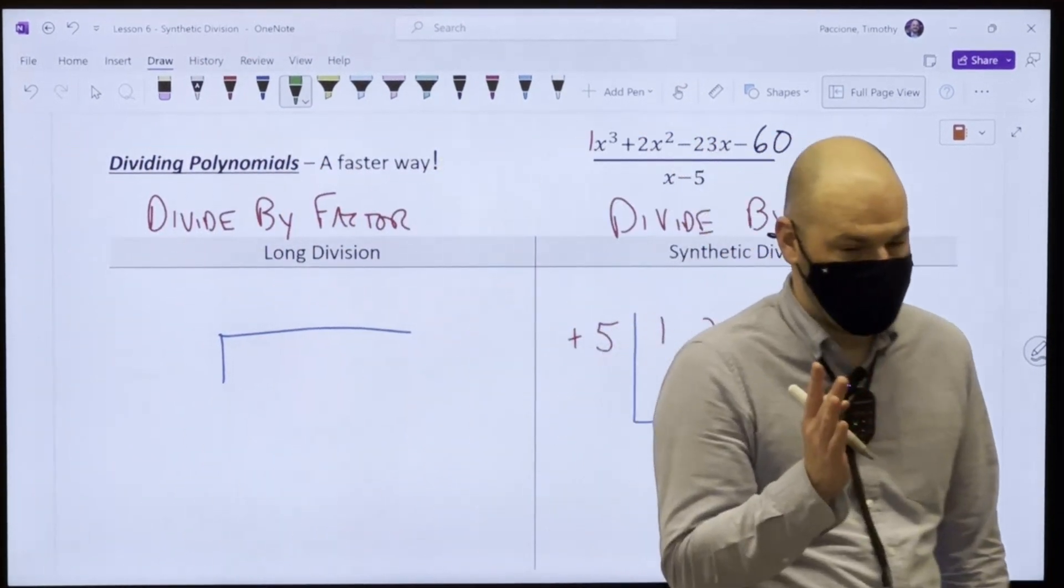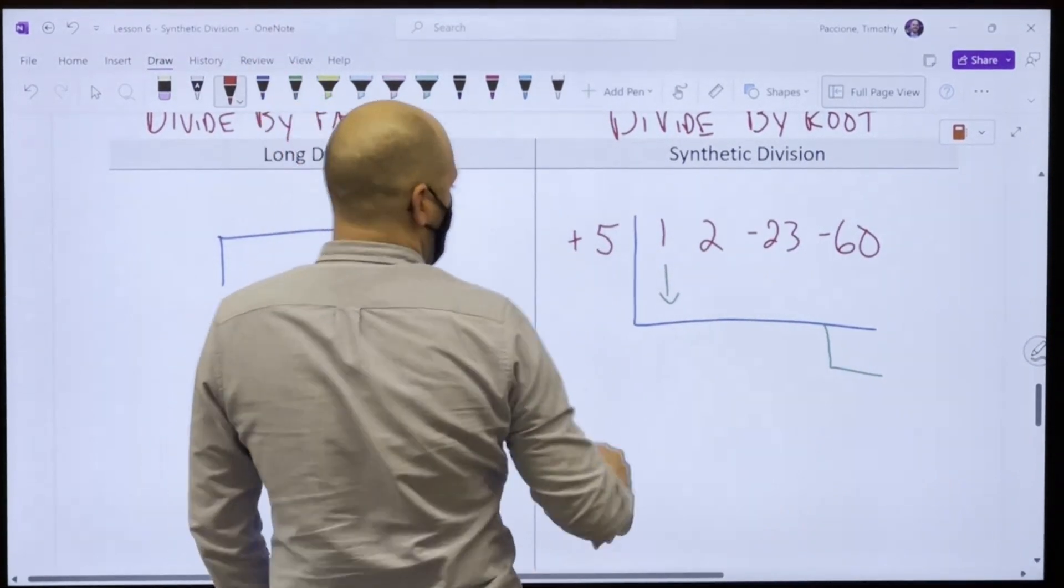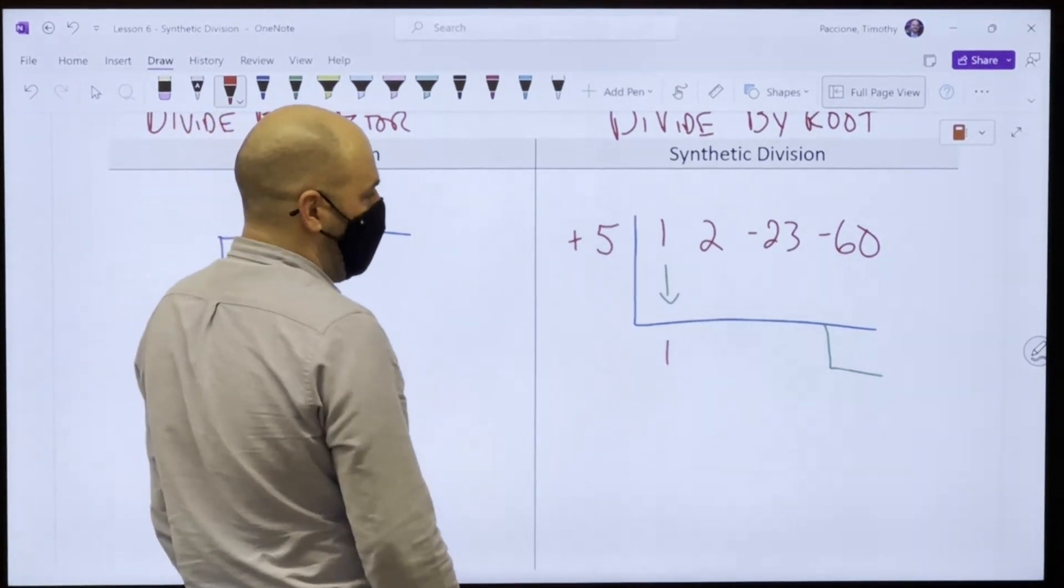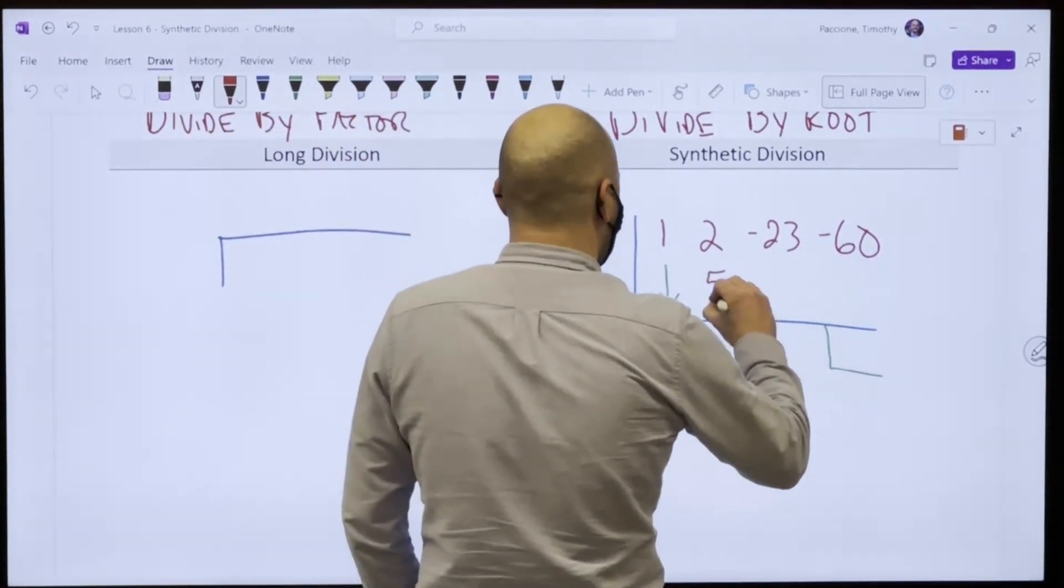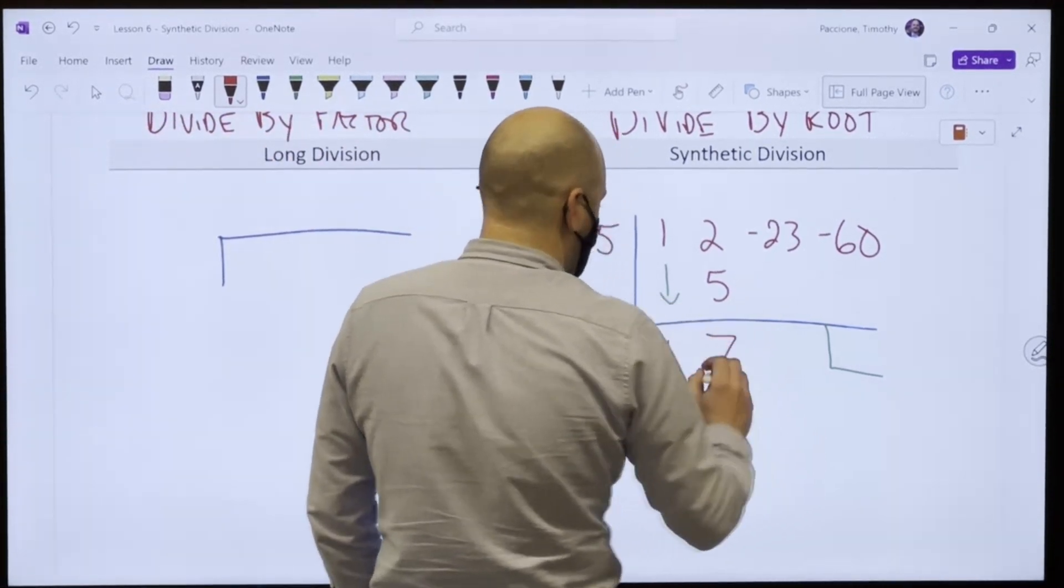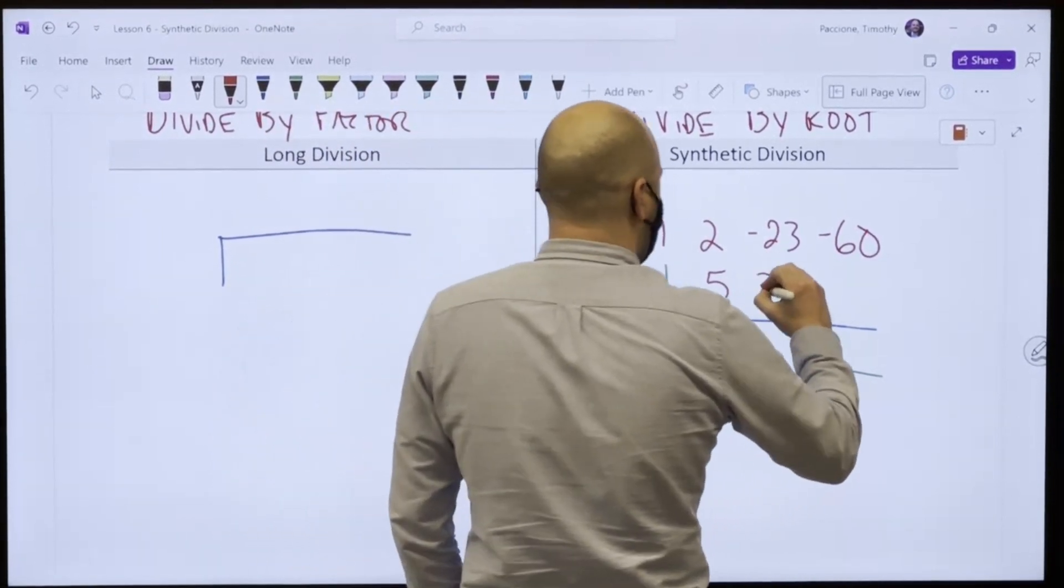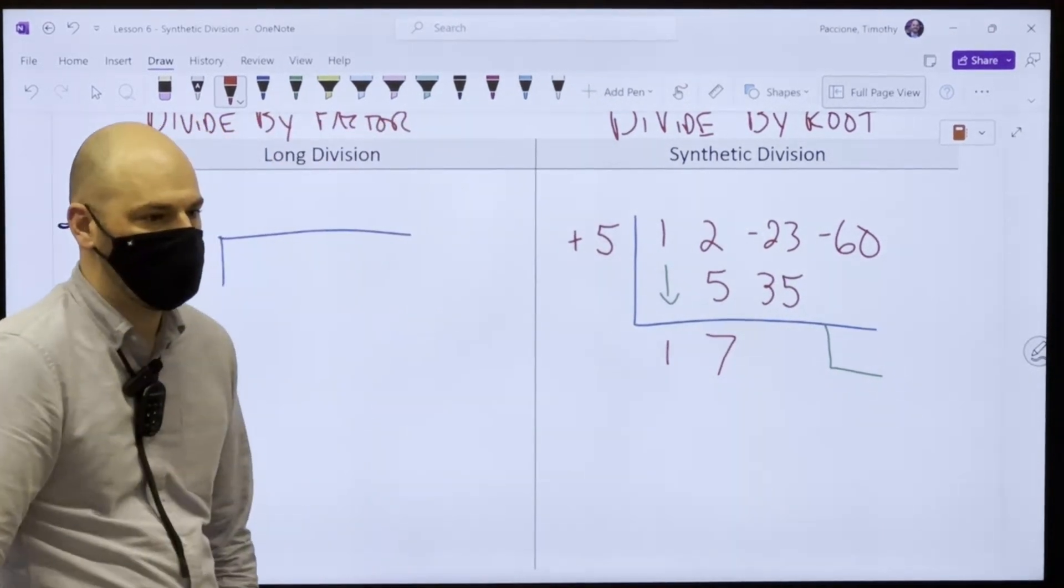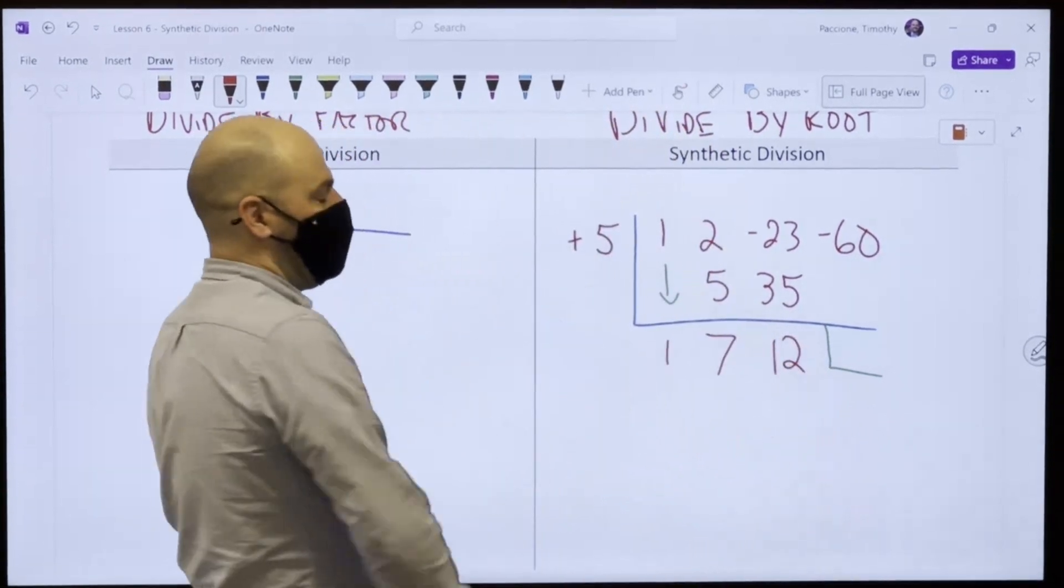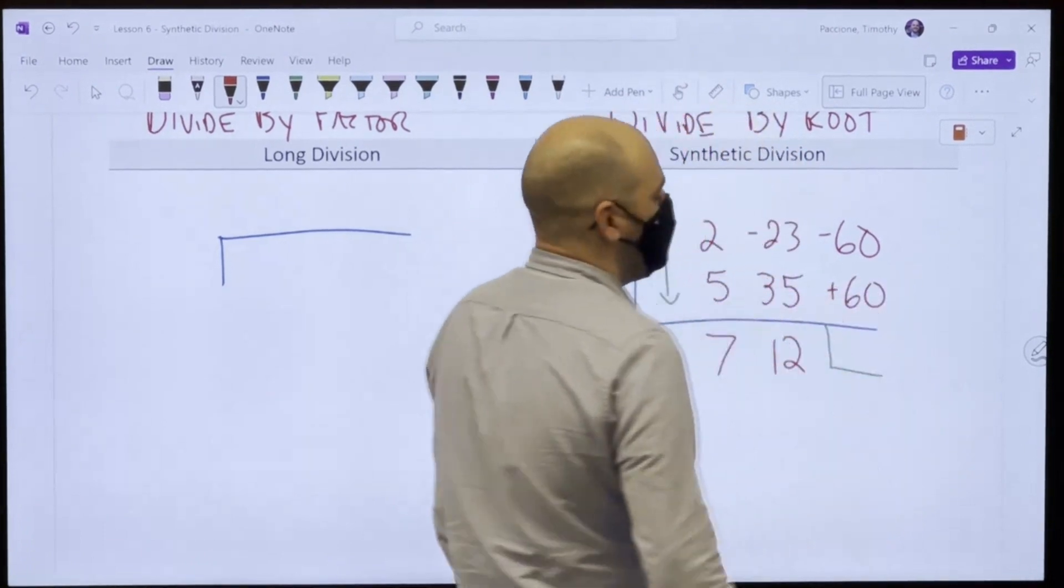Okay. So, here's the process. It's very simple. You bring down the first number. So, I get 1. Then I multiply that number by that number. What's 1 times 5? 5. What's 2 plus 5? 7. What's 7 times 5? 35. What's minus 23 plus 35? 12. What's 12 times 5? 60. Positive 60. What's minus 60 times 60? 0.